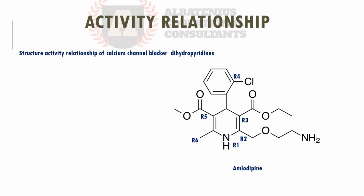We're going to be discussing the dihydropyridines. The structure we have here is for amlodipine. Starting with R1: R1 should be unsubstituted. In case there is substitution, it should not be bulky and it should be easily removable.